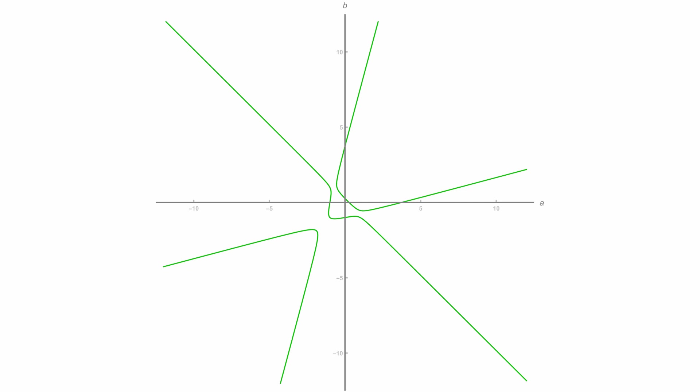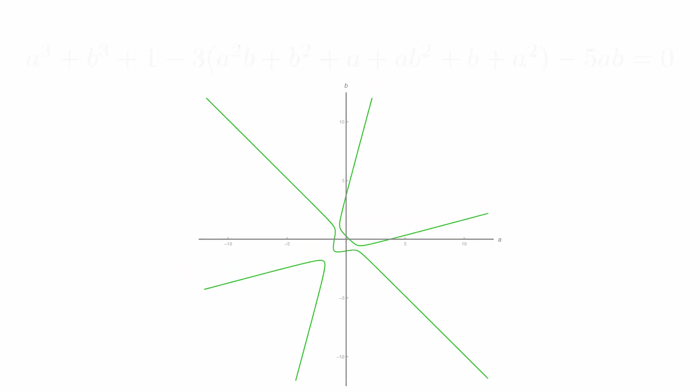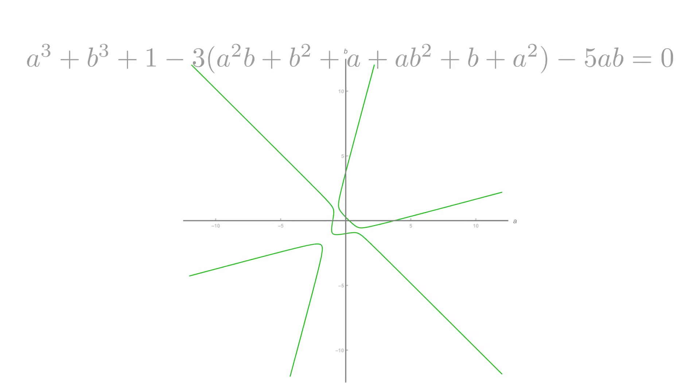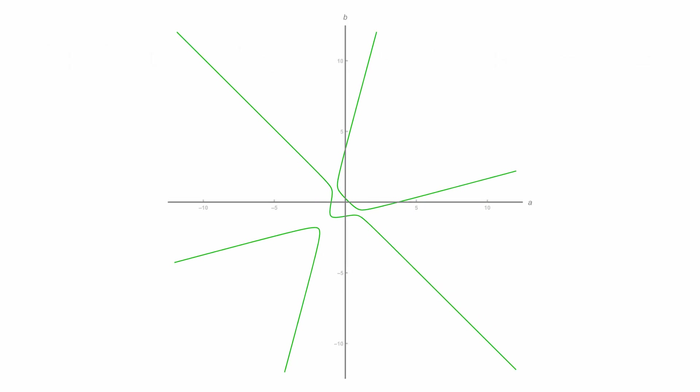So let's remember what our mathematician friend is trying to do. They're trying to find rational solutions to this. So a and b rational lying somewhere on this curve. And that's easier said than done.